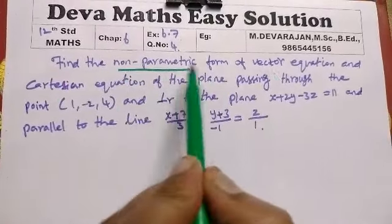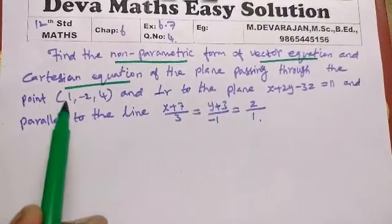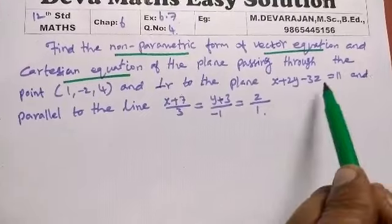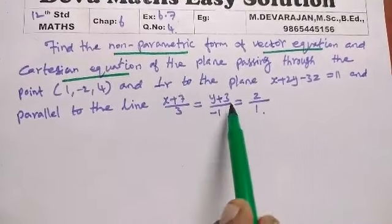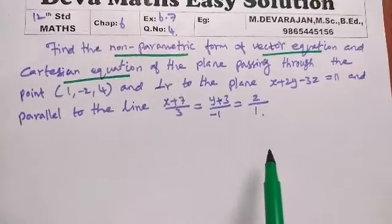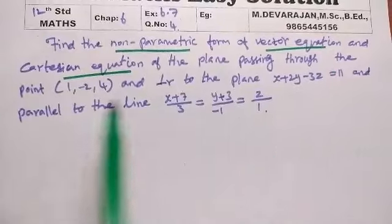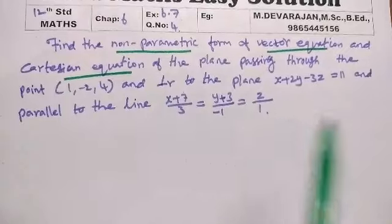Find the non-parametric vector equation and Cartesian equation of the plane passing through the point 1, -2, 4 and perpendicular to the plane x + 2y - 3z = 11 and parallel to the line (x+7)/3 = (y+3)/(-1) = z/1. This is the given plane, the point is passed and the plane is parallel to the line.